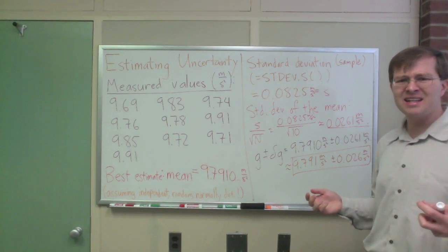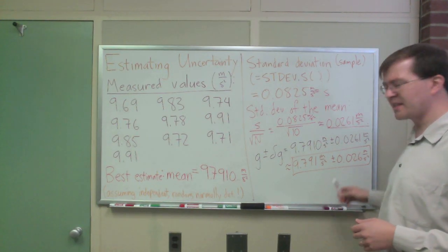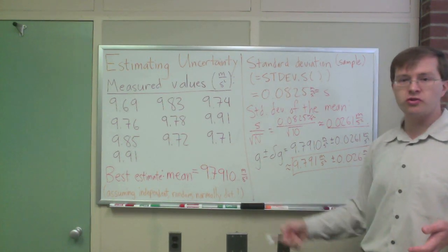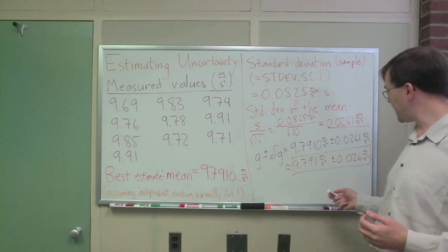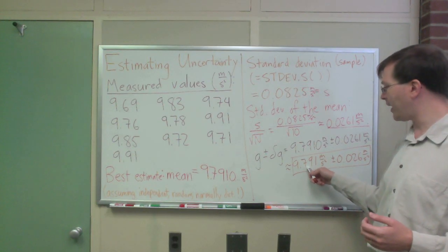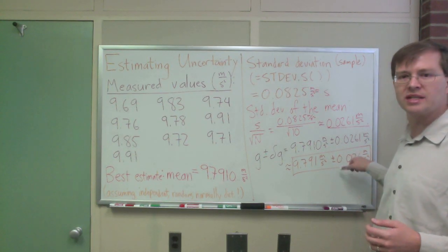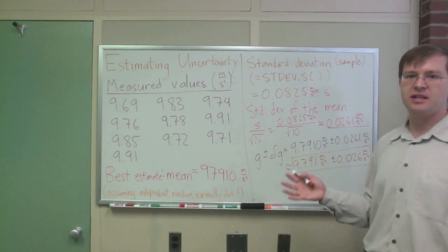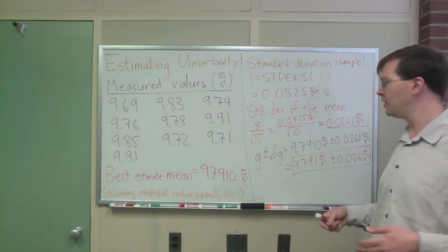Again, what I would say is, conceptually, this is one standard deviation of the mean. So I would say, again, assuming normally distributed error, I would say that I expect that the true value is within plus or minus two standard deviations 95% of the time. That's two standard deviations plus or minus is a 95% confidence level.